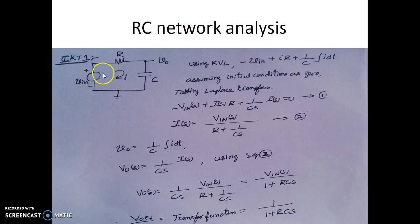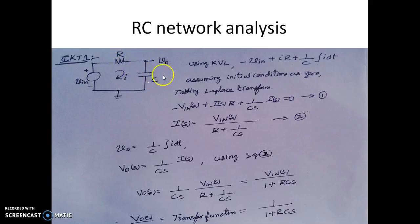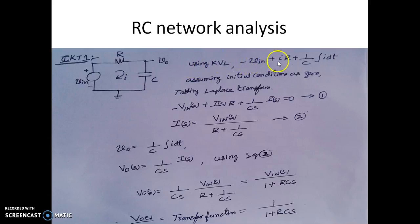As you can see, we have an input voltage VIN. There is a resistor R and a capacitor. The output voltage is taken across the capacitor. By writing KVL, we can write: minus VIN plus I_IN times R plus the voltage drop across the capacitor, all equated to zero.